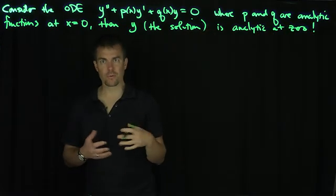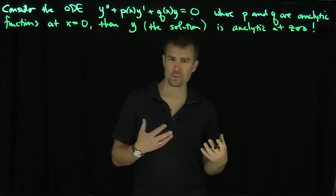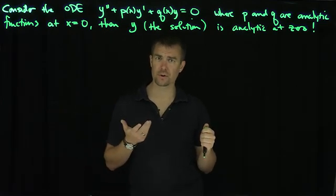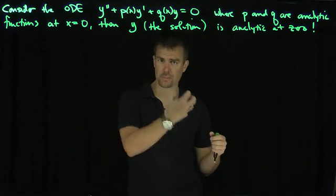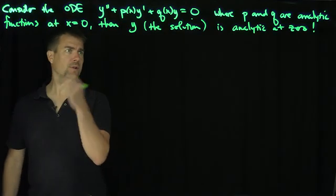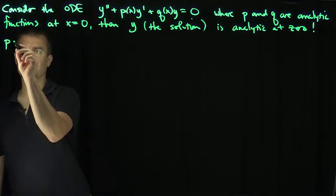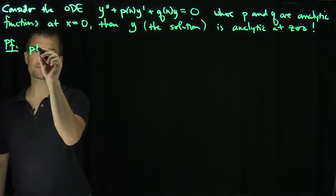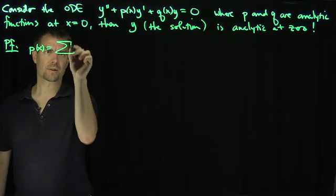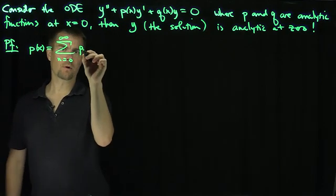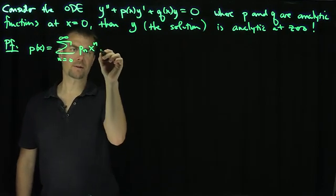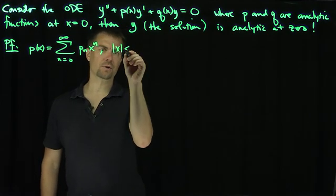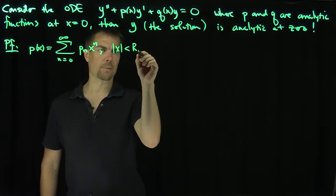This is sort of a introductory version of what's known as a regularization result. If I a priori have a second-order continuous differential function that satisfies this, I can actually construct a power series expansion for y. So the proof goes as follows: we're going to let p of x have a representation as the sum n goes from 0 to infinity of coefficients p-sub-n times x to the n. This representation is valid in some interval around the origin, for |x| less than a radius R-sub-p.